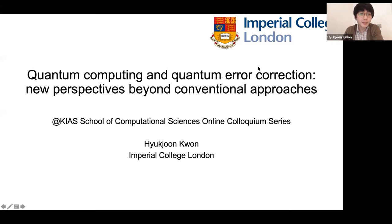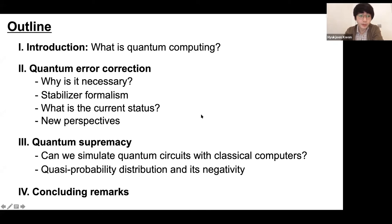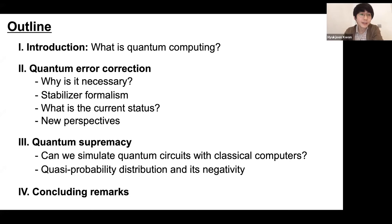I'll talk about what is quantum computing and what is error correction today. It'll be mostly an overview of the underlying principles of quantum error correction. But as I promised, I will show new perspectives beyond the stabilizer formalism — how we can understand error correction from a thermodynamic viewpoint. I'll also talk a little bit about quantum supremacy, where generalized quasi-probability distributions and their negativity play an important role.